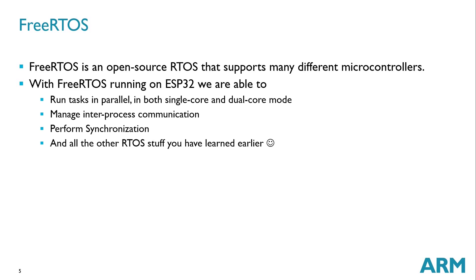With FreeRTOS running on ESP32, we are able to run tasks in parallel both in single-core and dual-core mode, manage inter-process communication like message queues, perform synchronization, and all the other RTOS features you have learned — mutex, semaphore, events, flags, and so on.